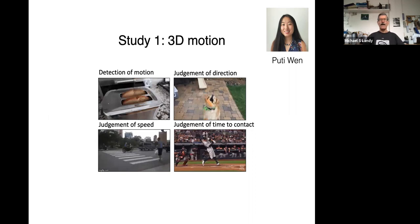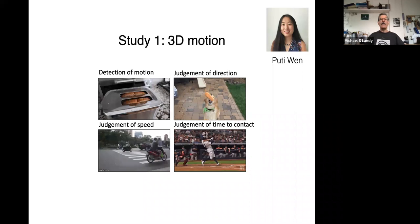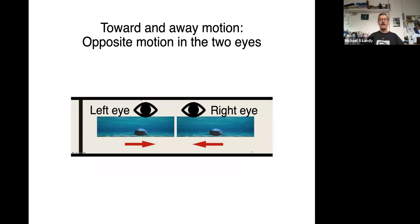Now, how does 3D motion work? Well, if something's moving straight towards you, it's moving to the right in your left eye and to the left in your right eye, so that 3D motion involves comparing the velocities of motion in your two eyes. Motion away from you would be the opposite of this. Motion rightward would be rightward in both eyes.